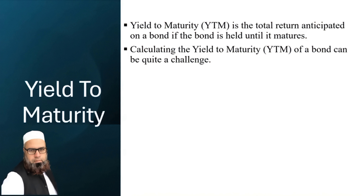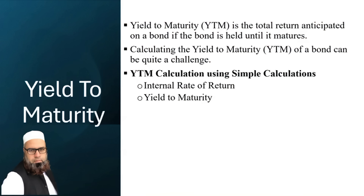If you have ever tried calculating yield to maturity of a bond, you know it can be quite challenging. Unlike other financial calculations, there is no direct formula that gives us YTM in a single step. It is more of a trial and error process. But don't worry — in this video I will show you how to find yield to maturity manually using simple formulas, breaking down the concept step by step. We will find YTM using two different formulas: the internal rate of return formula as well as the YTM direct formula.